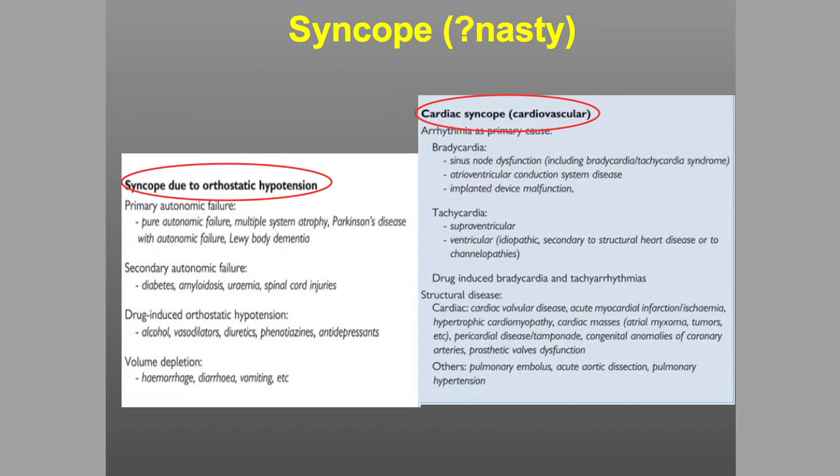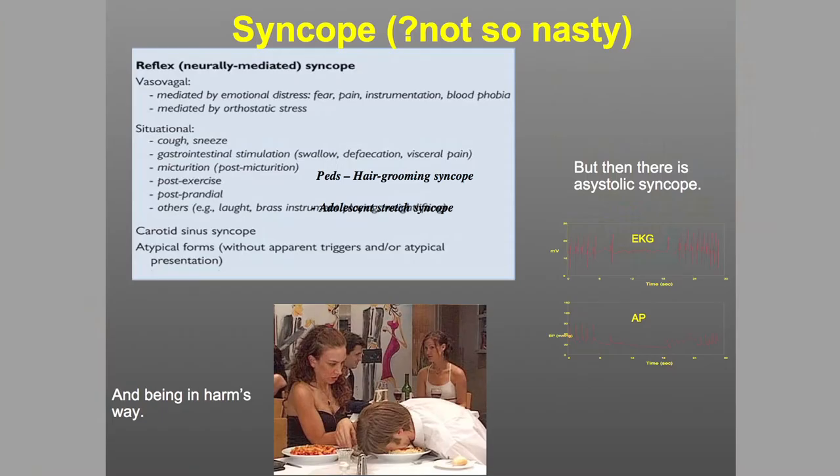Maybe not so nasty are the reflex forms, except deglutition syncope or so-called swallow syncope could land someone face-first in harm's way. People can faint and, because they happen to be in a dangerous location, they can die. I'm the only person I know who had a fainting patient fall off a cliff — but he landed on a ledge.